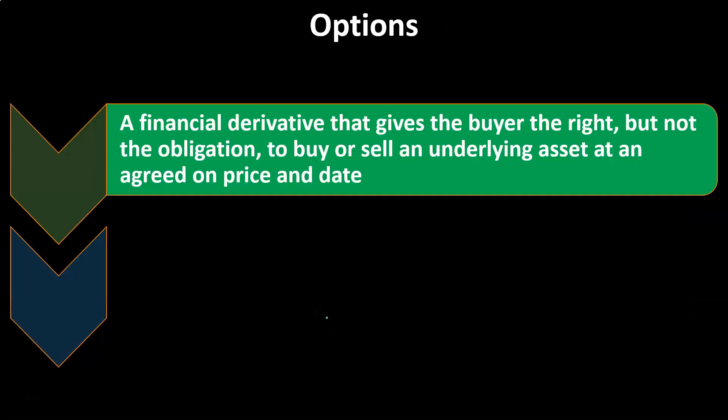Options are a financial derivative that gives the buyer the right, but not the obligation, to buy or sell an underlying asset at an agreed-on price and date. So there's some form of speculation into the future — what's going to happen when you're thinking about options.